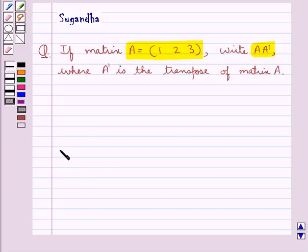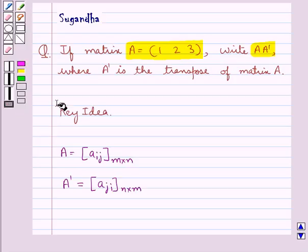Now we know if we have a matrix A equal to Aij, that is the elements are Aij of order m by n, then its transpose is given by A dash which is equal to the matrix with elements Aji of order n by m. That is, the transpose of the matrix is obtained by interchanging rows and columns of the given matrix. This is the key idea that we use for this question.